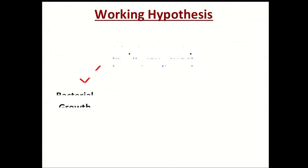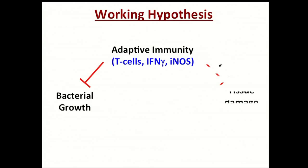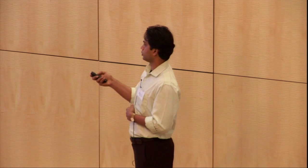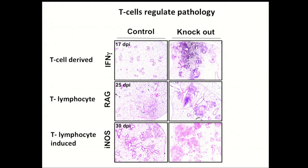Based on that, we hypothesize that adaptive immunity — here I will focus on T cell response as the adaptive immunity — can control bacterial growth, which we all know, and can also control tissue damage. The host must control bacterial growth as well as tissue damage to survive a chronic infection such as TB. To address this hypothesis, we infected different mouse strains lacking T cells or lacking T cell-derived interferon gamma or nitric oxide synthase with tuberculosis. We found that all these mouse strains lacking different arms of the T cell response develop extensive damage to their lungs and succumb to infection quite rapidly.